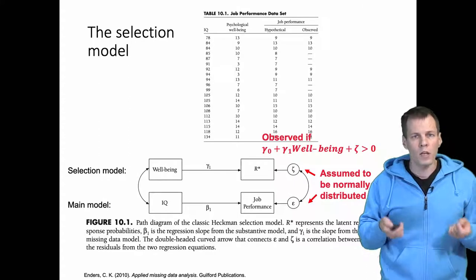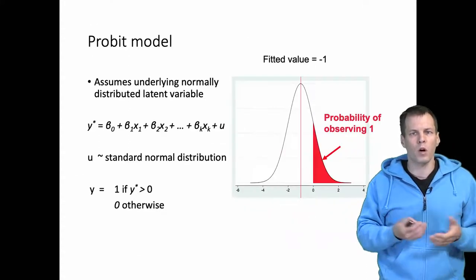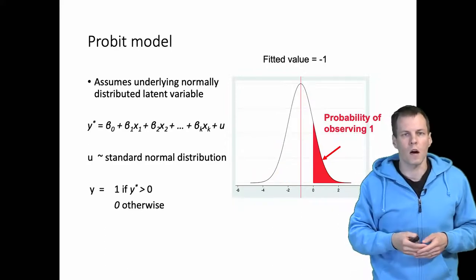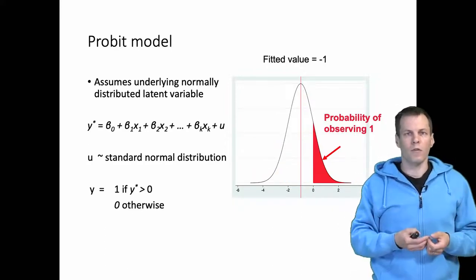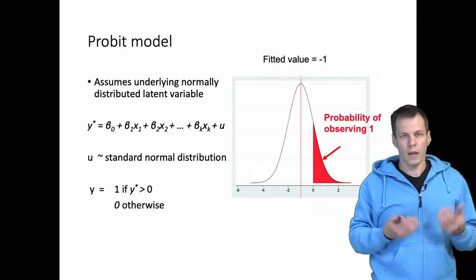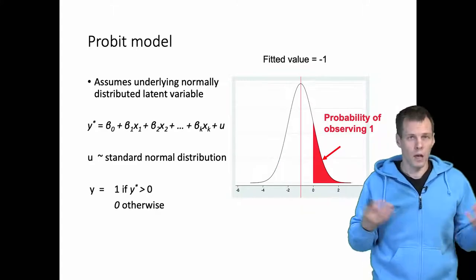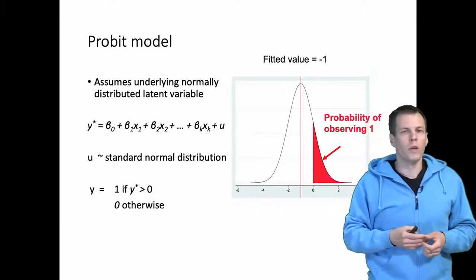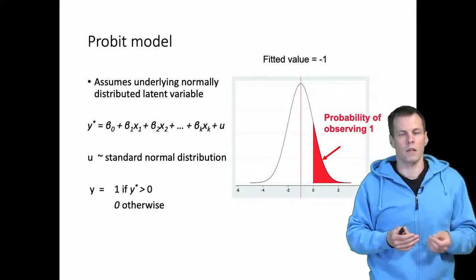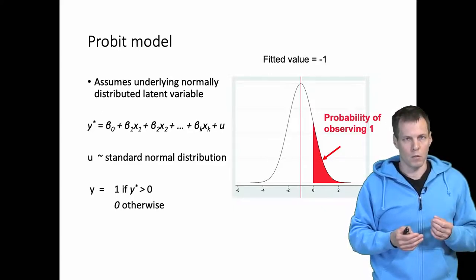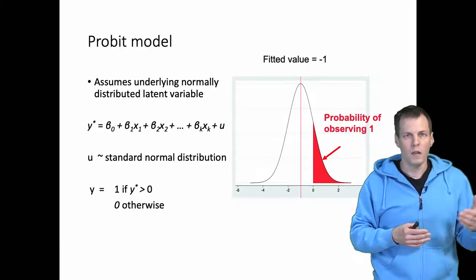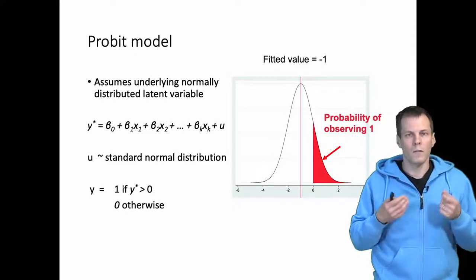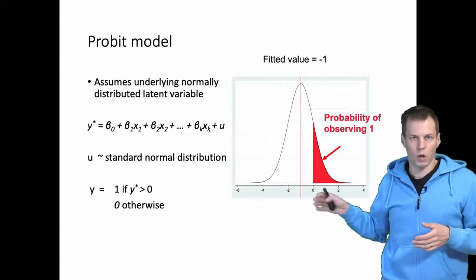The probit model works by estimating a linear prediction first — we call it Y star — like a normal regression model. We add a normally distributed error term to the linear prediction. Instead of observing Y star directly, we observe one if Y star is greater than zero, and zero otherwise. Here, one means the person was observed and zero indicates missing data. If you're unfamiliar with the probit model, you should look at another video where it's explained in detail.